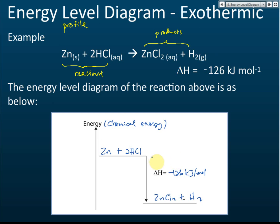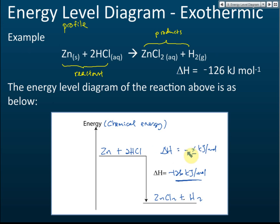In cases where you don't know the heat of reaction, you can write delta H equals negative x kilojoules per mole, using x to represent the unknown value. What's important is the negative sign — it shows that for an exothermic reaction, delta H is negative.